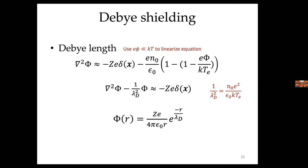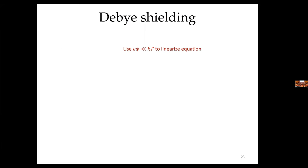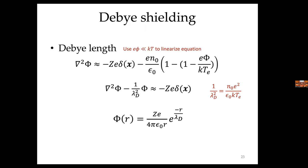The end result is that the potential as a function of radius, measured from the center of the test charge outward, decays exponentially with a characteristic length that we define as the Debye length. This is the characteristic shielding length of a plasma. Whenever you place a charge in a plasma it will be shielded, and within a Debye length is the extent to which you can feel the potential of that external charge.